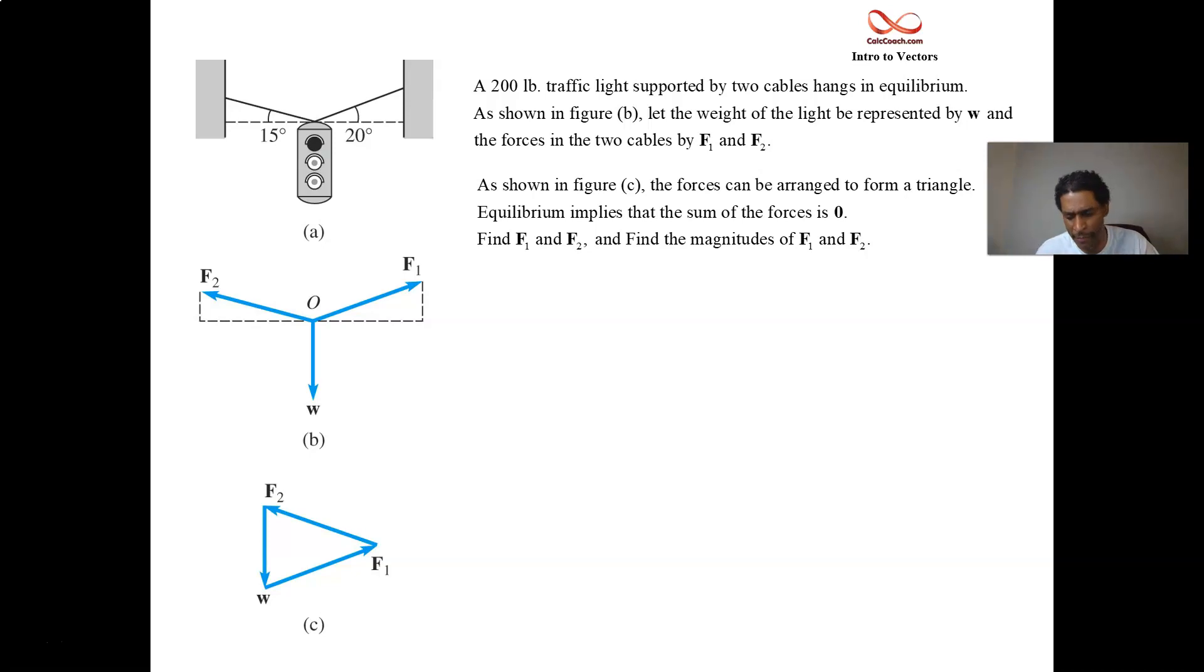We have the picture of the traffic light. The angle of inclination, the angle that the cable makes with the horizontal, is different from the right and the left. It makes a 20 degree angle with the right and a 15 degree angle with the left. The traffic light has a weight of 200 pounds, and that's a force acting on the traffic light as well.